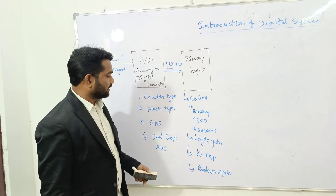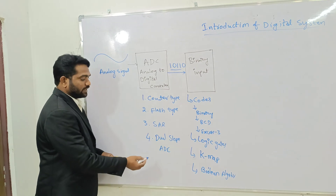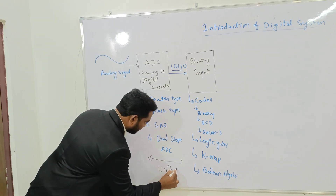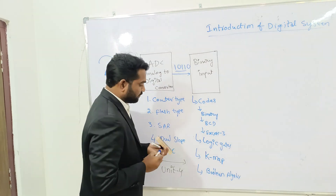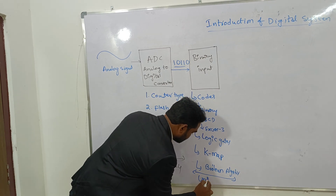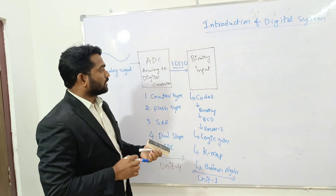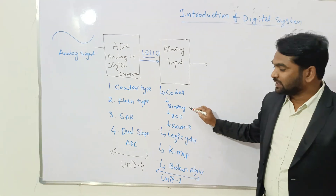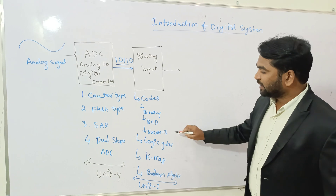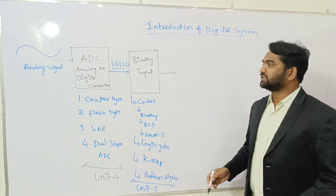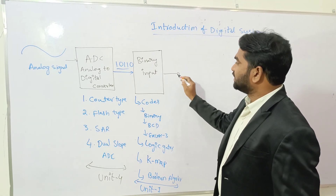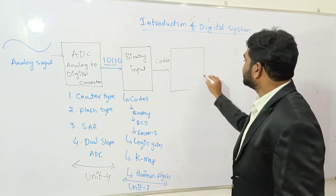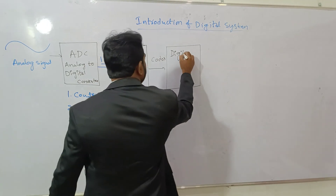So to summarize, all four types of ADCs are covered in unit four. The concepts of codes, logic circuits, KMAP, and Boolean algebra are learned in unit one. The output of binary input — as binary code, BCD code, XS3 code, or logic expression — flows toward the next block, which we call the digital system.